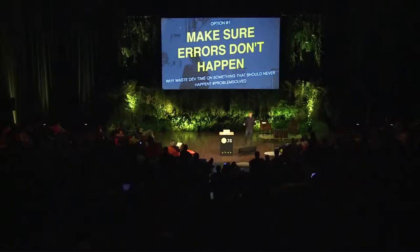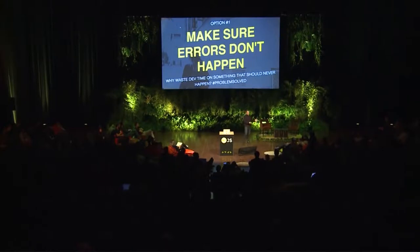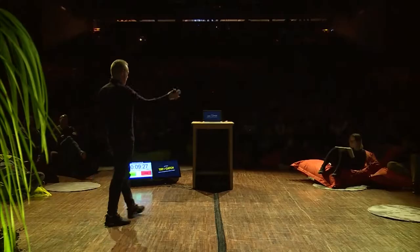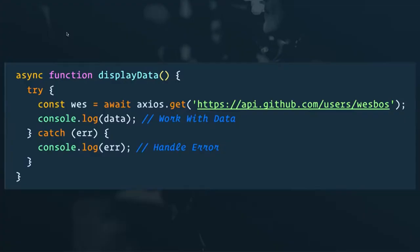If you've seen examples online, error handling can get ugly. Let's look at a few options. The first option for error handling is: just use a try-catch. Wrap everything in a try-catch and you'll be safe. Your async function gets a try block where you write all your code, and if anything goes wrong, you catch the error and deal with it accordingly.